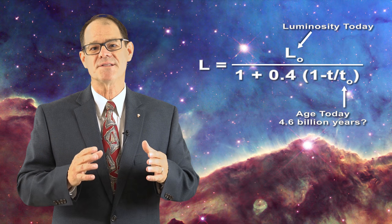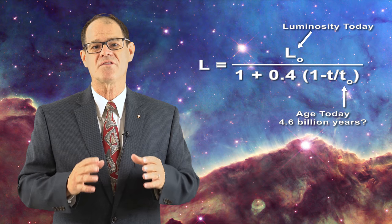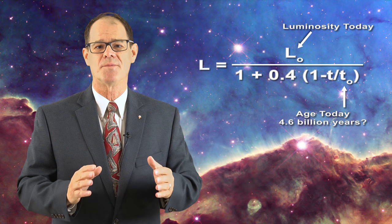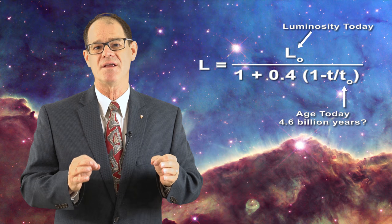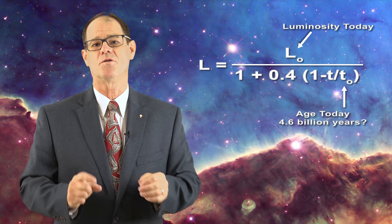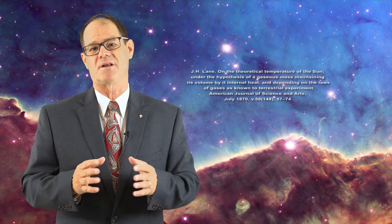As a result, 4.6 billion years ago the Sun was thought to have a luminosity which is about 30 percent lower. The luminosity of the Sun then increases with time as T divided by T sub zero goes to one. This is actually a consequence of Lane's law first proposed at the end of the 19th century.